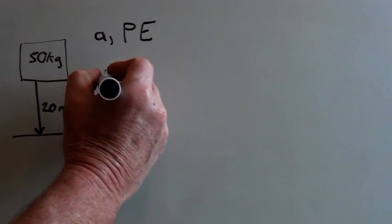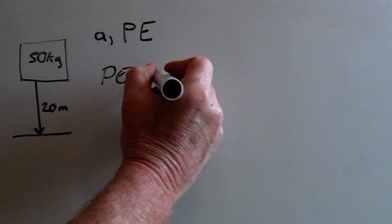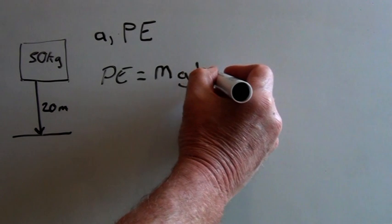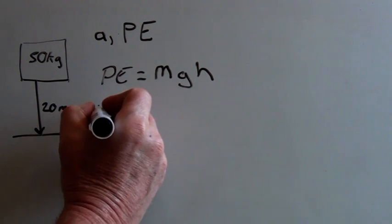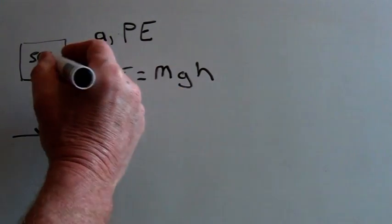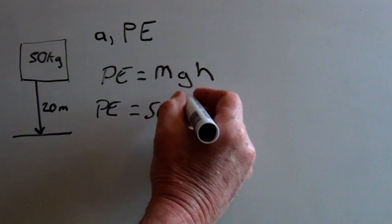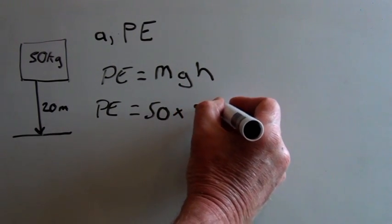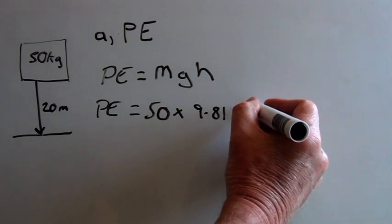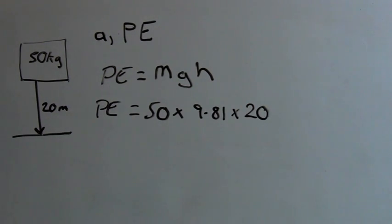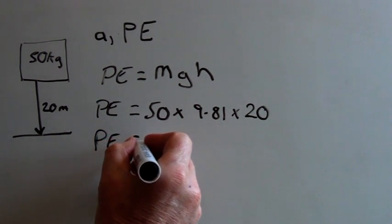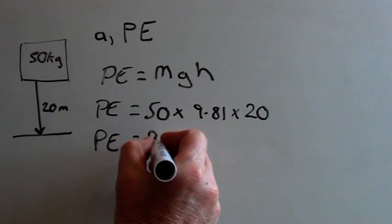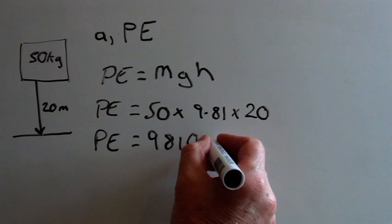Potential energy is given by Mg times H, so we've got the mass of the body times the gravitational acceleration times the height. So this gives PE equals 50 times G is 9.81 times the height which is 20. So calculating this, the potential energy 20 meters above the ground is 9,810 joules.